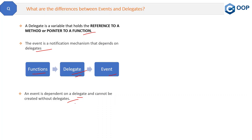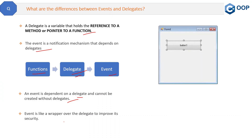You can tell this to the interviewer as well. Another key point is that an event is like a wrapper around a delegate to improve its security. So why do we create events if we already have delegates? We create events to improve security. For example, if you have ever worked in ASP.NET Web Forms or WinForms, you know those button click events.